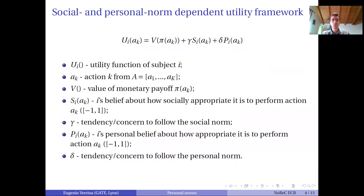Before I go into the experimental design, let me briefly talk about the social and personal norm dependent utility framework we propose. Very simply, the utility of an individual I from performing action a_K is given by the monetary payoff attached to the action plus two symmetric components — a social norm component and a personal norm component. We are going to estimate the weights that people put on these different components.